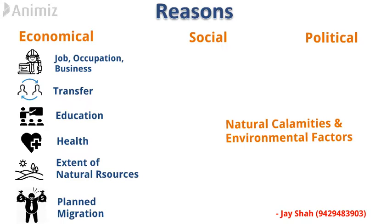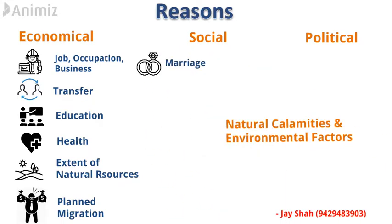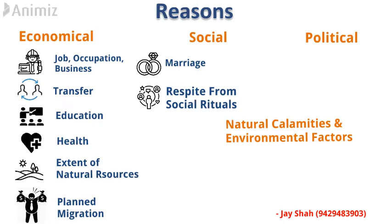The second main category is social reasons. First is marriage — a lady has to migrate from her native place after getting married. Second is respite from social rituals: society in rural areas is orthodox and you have to follow lots of traditions, but in urban areas society is liberal and people have modern thinking. The youth of rural areas get attracted towards this modern and liberal lifestyle, and in this manner the person migrates from rural to urban area.